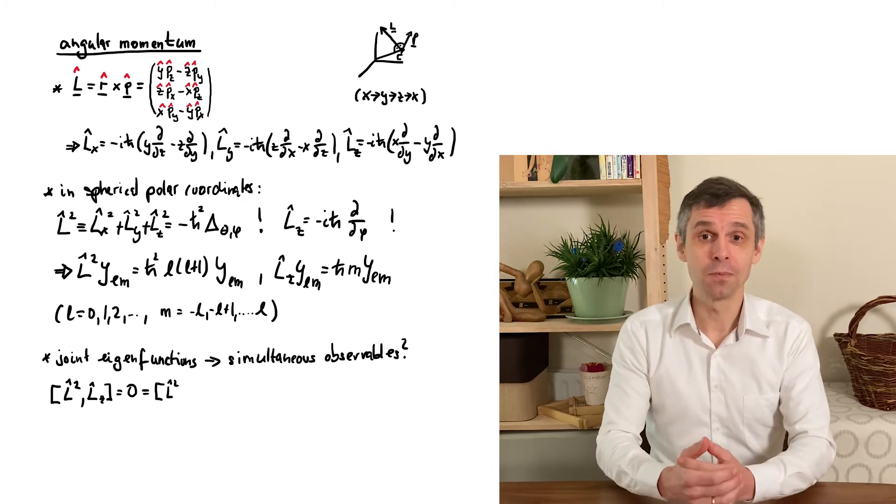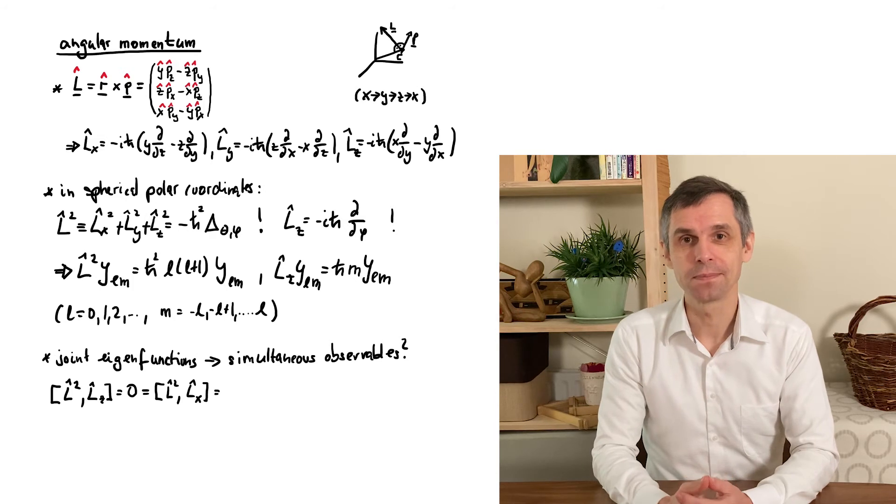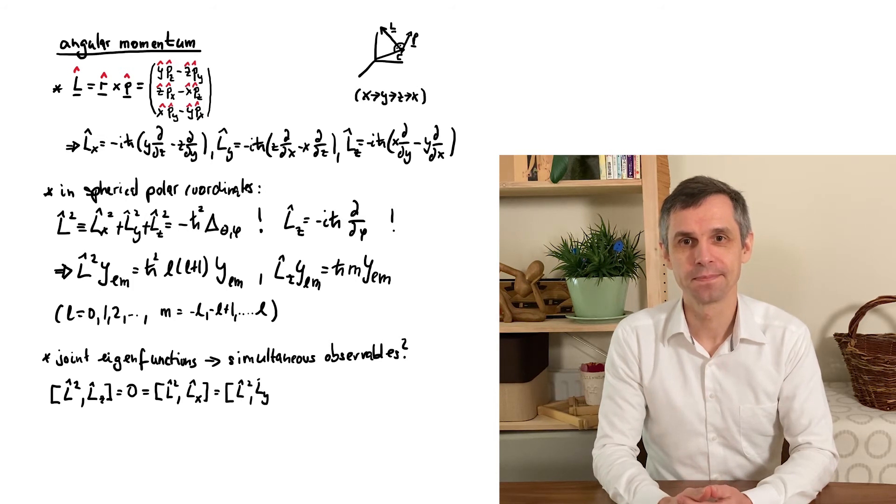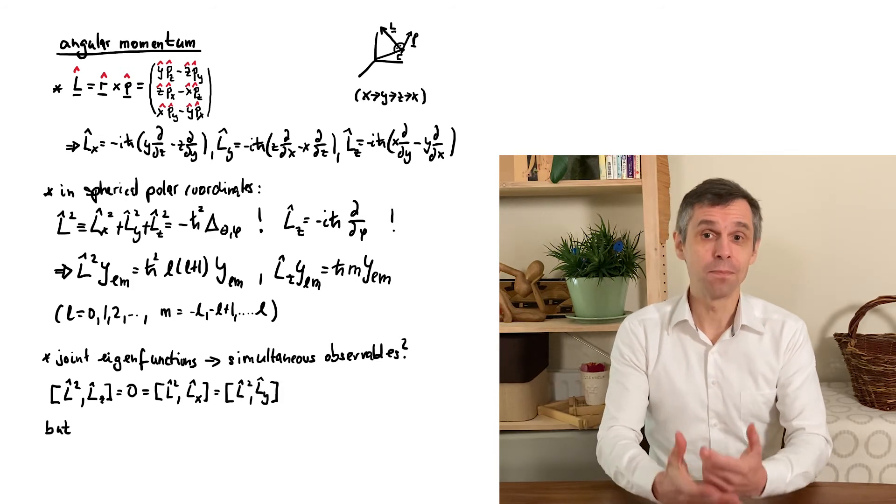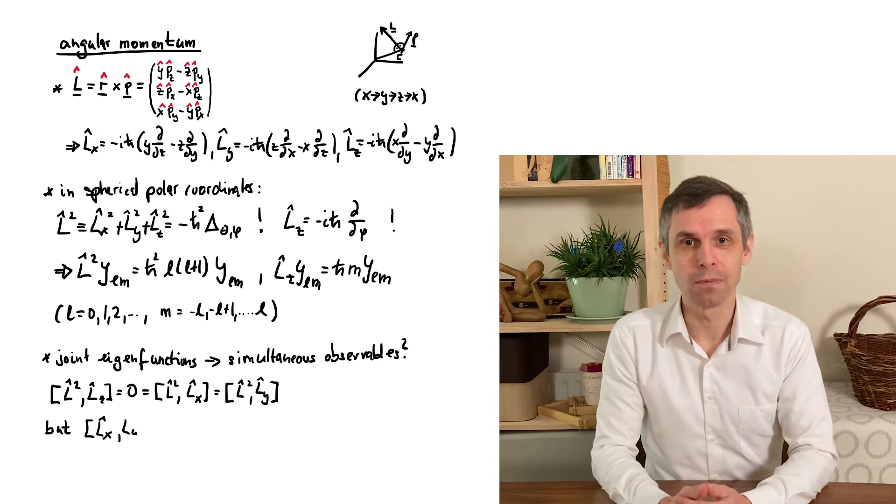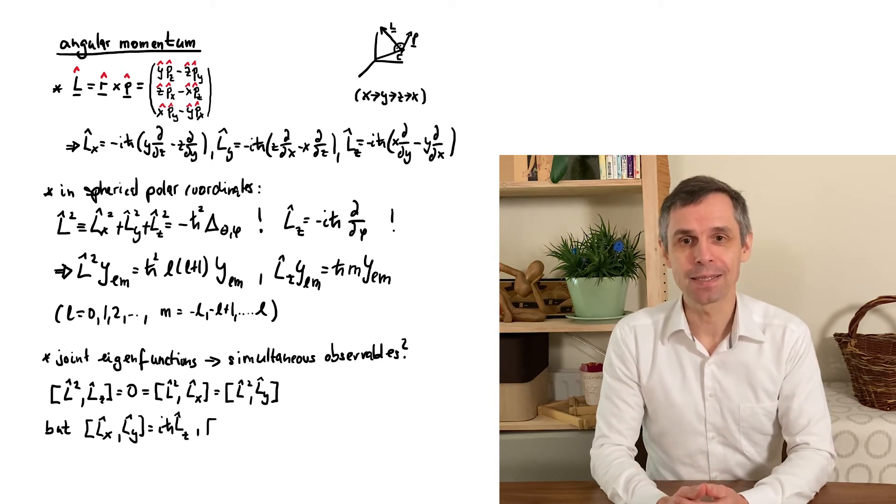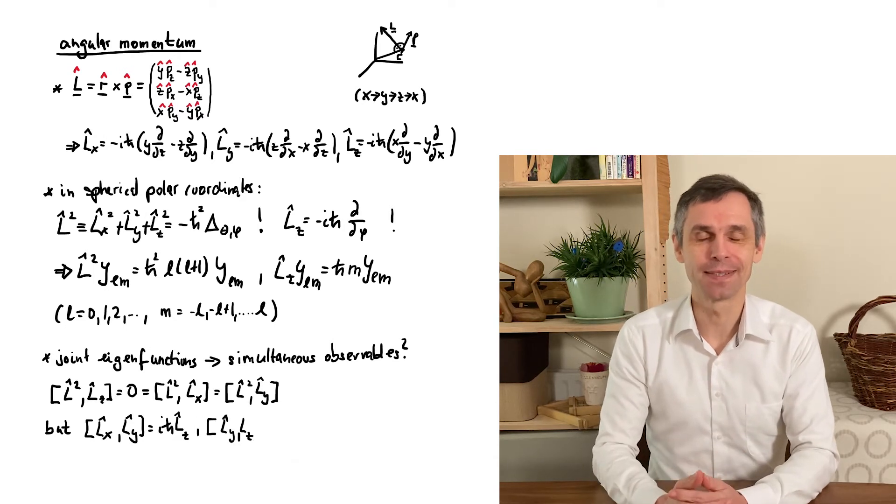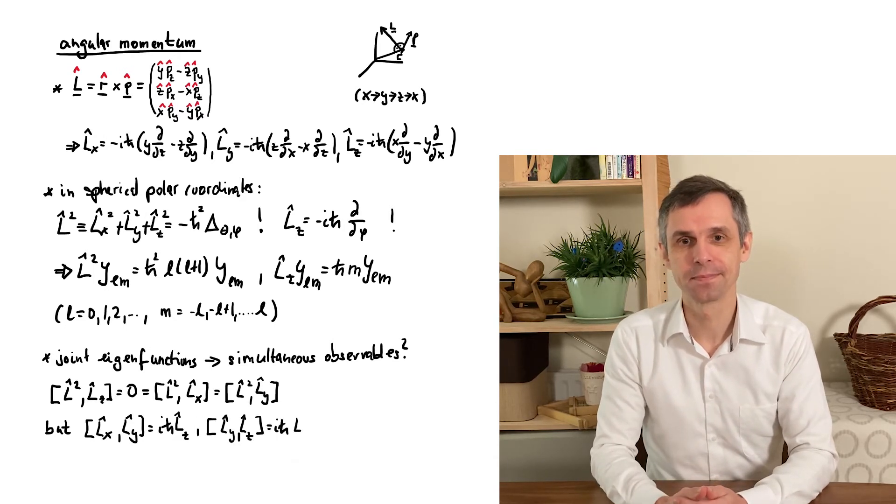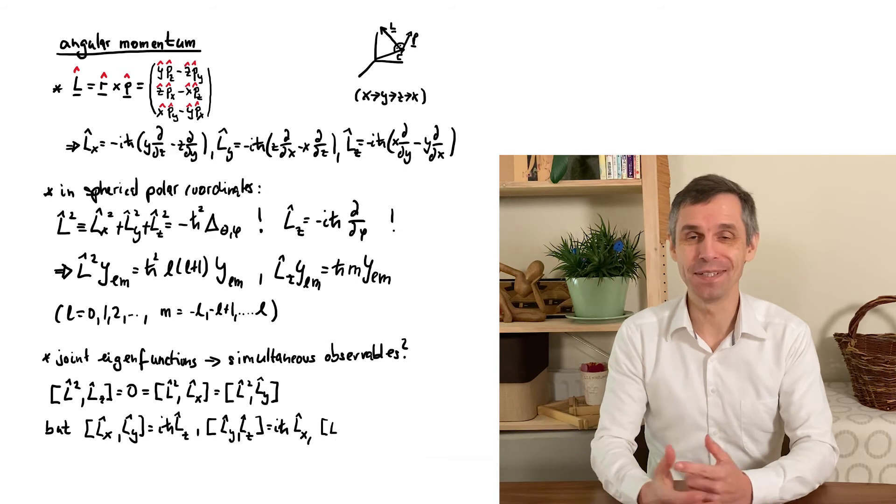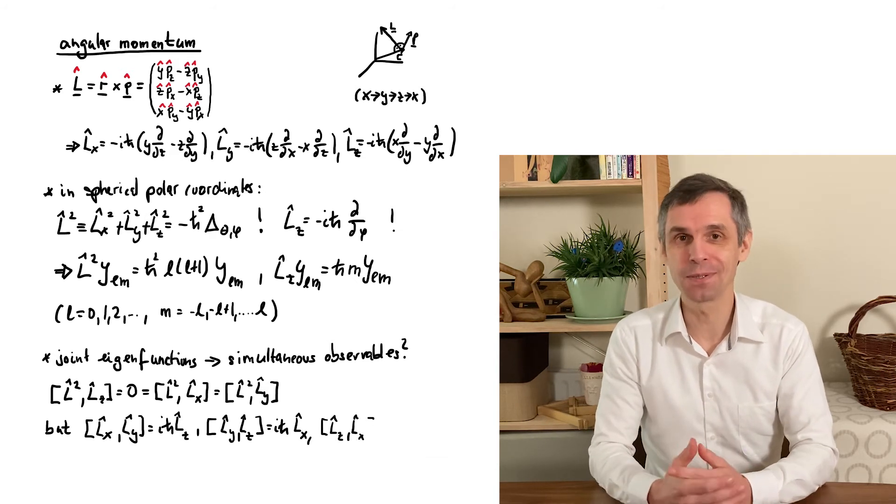Furthermore, L squared also commutes with the other two components. However, importantly, any two components of angular momentum do not commute with each other. Their commutator is actually proportional to the third component. That's beautifully symmetric and an important result.